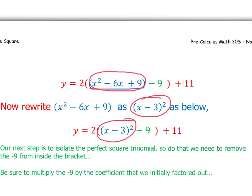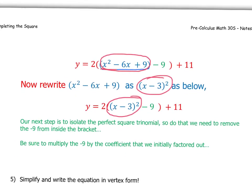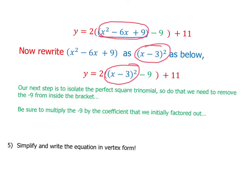Now, the next step we have is to isolate the perfect square trinomial. So we want this guy right here all by itself. And you can see that there's a minus 9 in here that we need to try to get out of the bracket. Now, in order to do that, it's not just as simple as taking the 9 and moving it over. You have to notice that it's inside the bracket, and there is a coefficient of 2 outside of that bracket. So what we need to do is we need to multiply the 9 by the coefficient that we initially factored out.